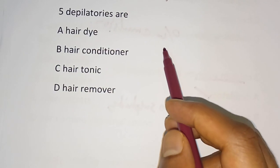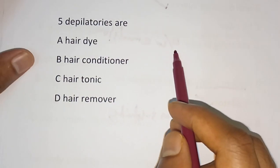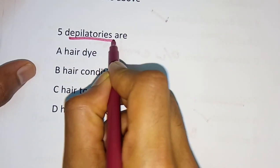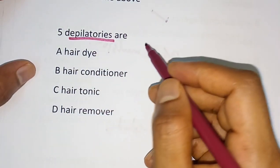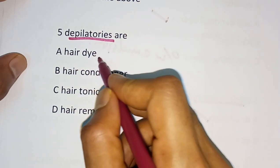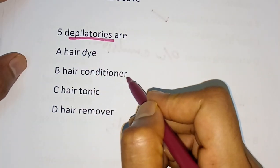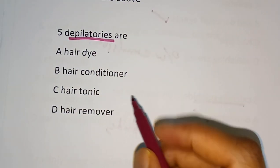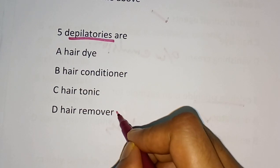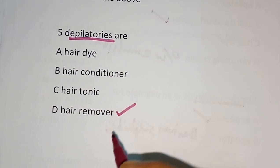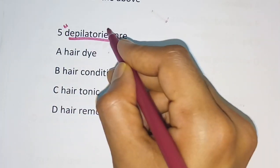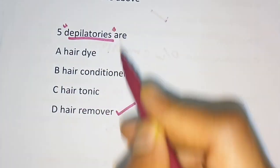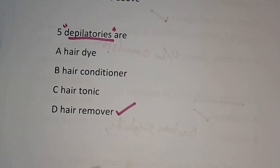Next question: The word 'depilatory' means — Hair dye, Hair conditioner, Hair tonic, or Hair remover? The correct answer is hair remover. Depilatories are also known as hair removers.